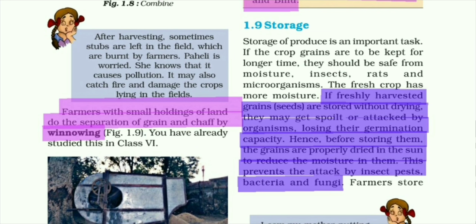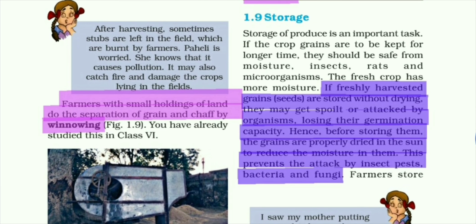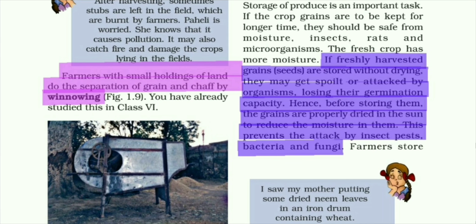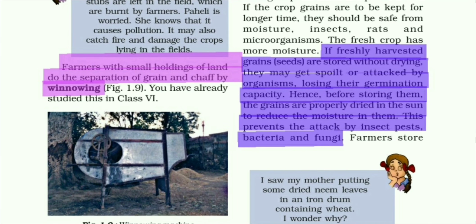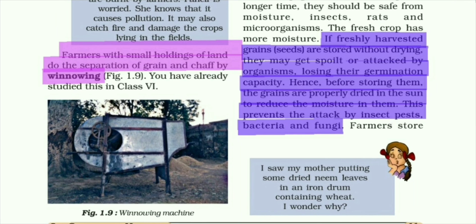Fresh crops have the most moisture. If freshly harvested grains are not handled properly, they may get spoiled or attacked by organisms and small microorganisms, which can destroy the grain or cause it to lose its germination capacity. Before storing, the grains are properly dried in the sun, which prevents attack by insects, bacteria, and fungi.